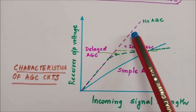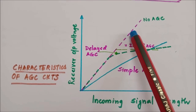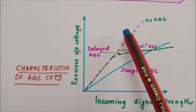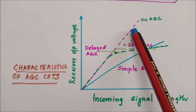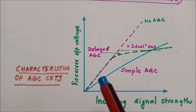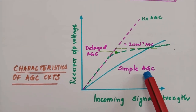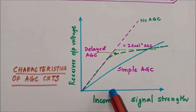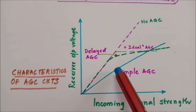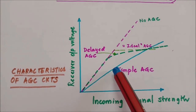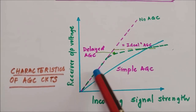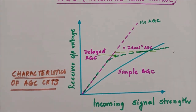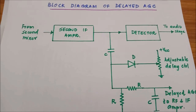No AGC means there is no control, which is not desirable — when you tune to different stations you hear them at different strengths. A good receiver is one which has an automatic gain control mechanism. Simple AGC has the limitation that the control is imposed even on weak signals, which causes already-weak signals to be further attenuated. What is ideal and desirable is a delayed AGC circuit.